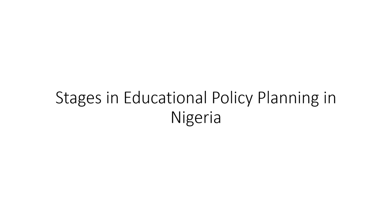There are different stages that are involved when you are planning a policy. The first stage is the policy formulation stage. In the last video, we looked at those things you need to consider to formulate a policy. You need to look at what is on ground — you have to do a scanning of the environment — because the existing economic and political situation will help you know the type of policy that will be formulated as well as the resources that are available.